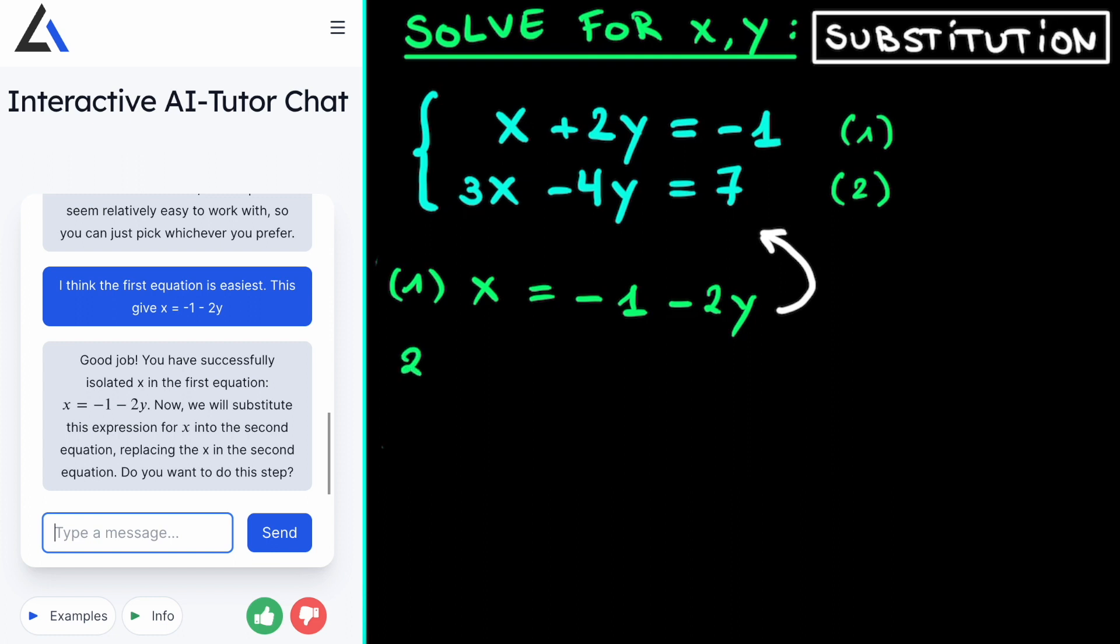So if we do this, we get the following for the second equation. We have 3 multiplied by x, but now we know that x is minus 1 minus 2y minus 4y, which just remains as is, is equal to minus 7.